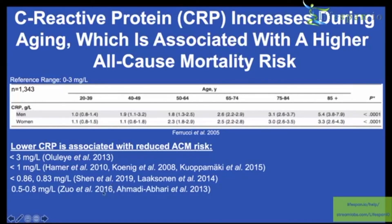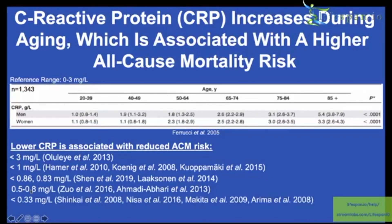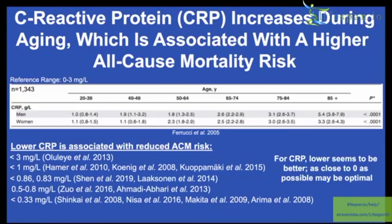Going further, two studies found 0.5 to 0.8 mg/L may be optimal. And four studies found CRP levels less than 0.33 mg/L were associated with lowest risk of death from all causes. The data suggests that lower is better for CRP, and as close to zero as possible may be optimal.